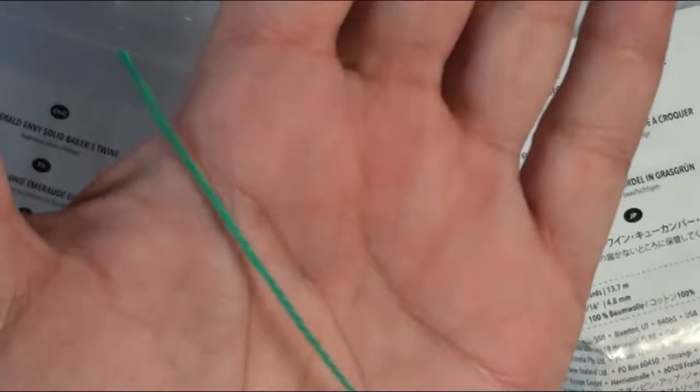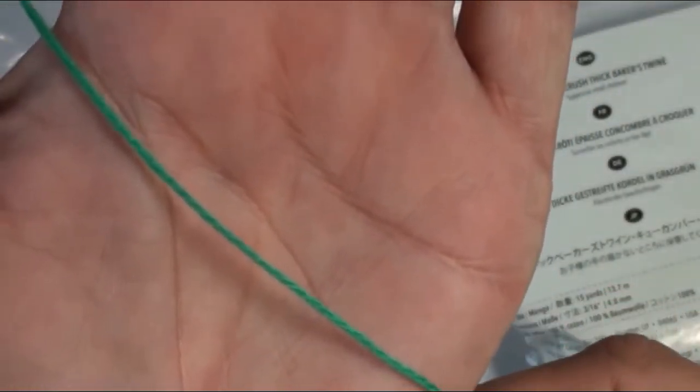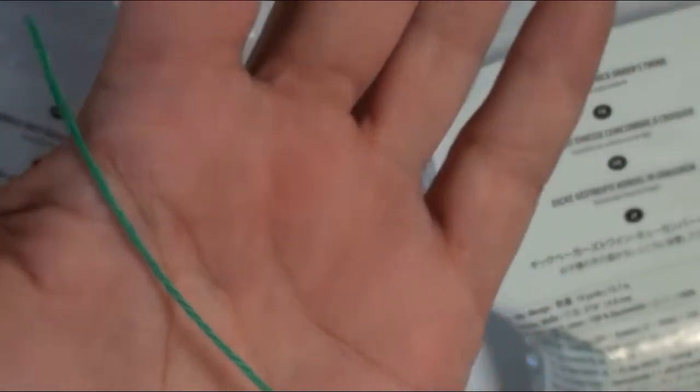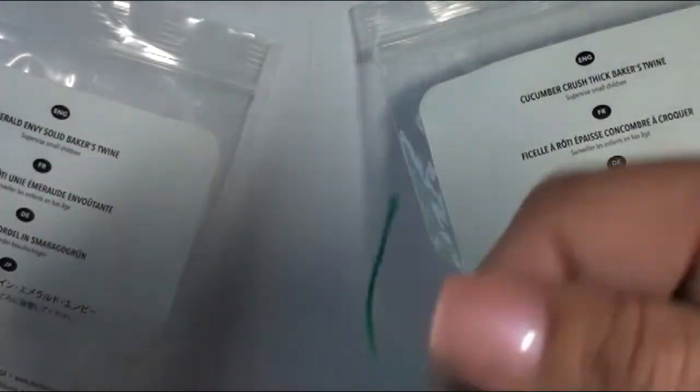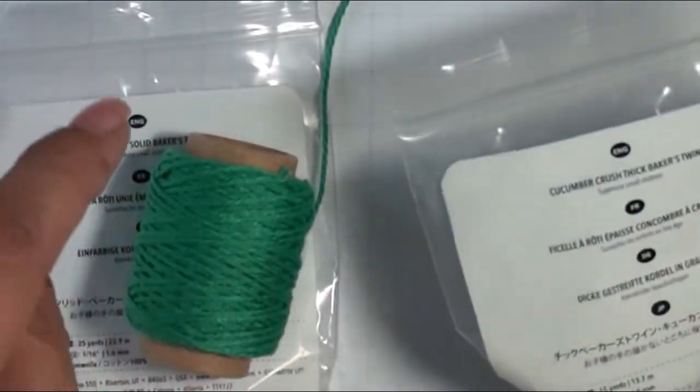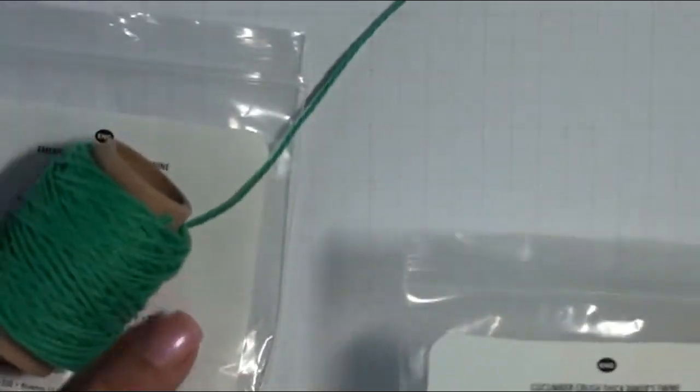Okay, this is an Emerald Envy Solid Baker's Twine. And if you take a look at this, there's some meat to it. Maybe not too much, but there's still some meat to it.